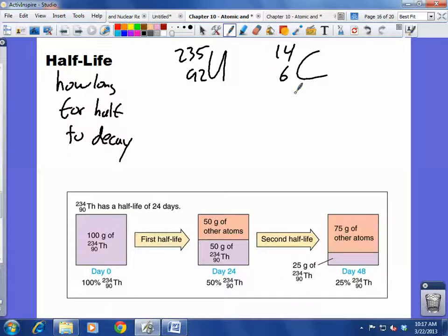We can never exactly say when that last thorium atom is going to decay. All we can say is that we're going to keep decreasing by half every 24 days.